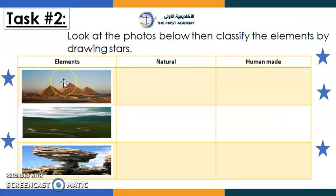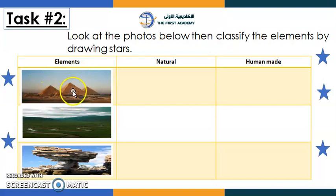Task number two: look at the photo below, then classify the elements by drawing stars. Look at the first picture — tell me what you can see. I can see pyramids. The pyramids are located in Egypt, and they are made by humans.